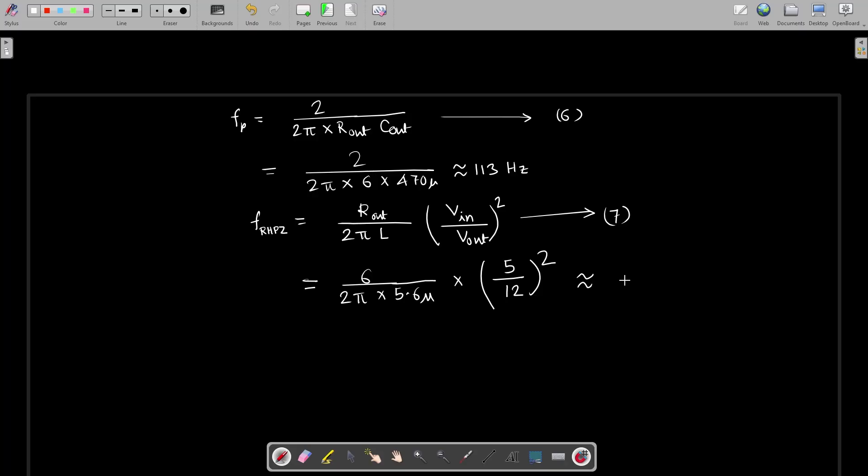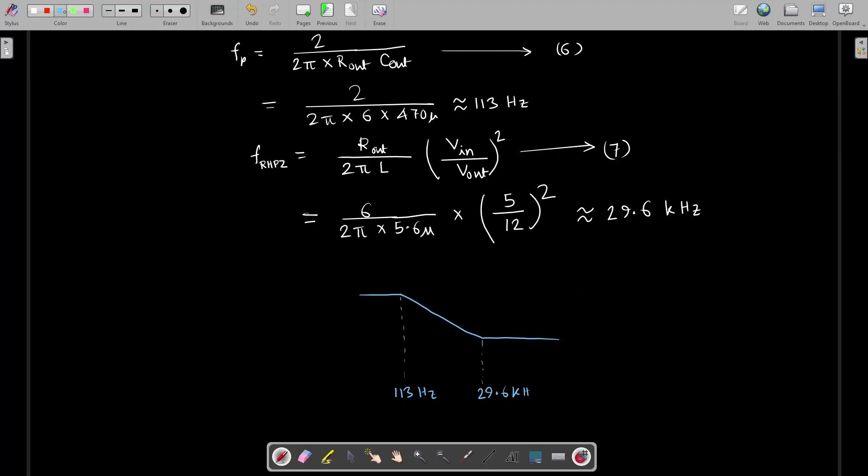The thumb rule is that the crossover frequency should be at around one-fifth of the right half plane zero, so the crossover frequency should be at around 6 kilohertz. Since the system has one pole at low frequency region, we need a type 2 compensator. The compensator has a pole very close to the origin, then a zero at around 482 hertz that is near the power stage pole. The compensator has a second pole at 48 kilohertz which helps to suppress the high frequency switching noise.